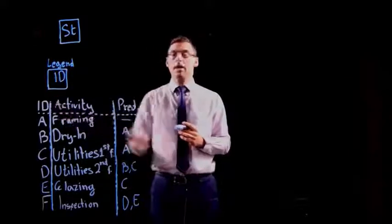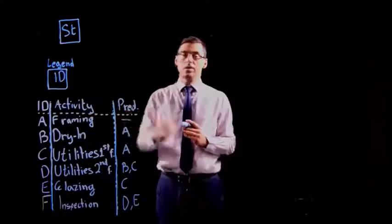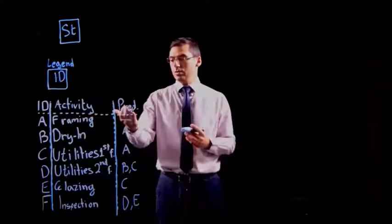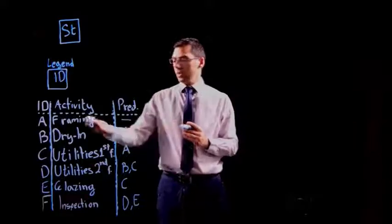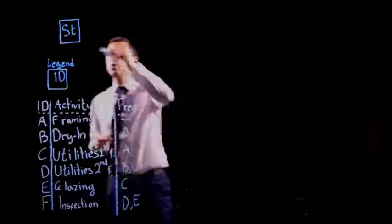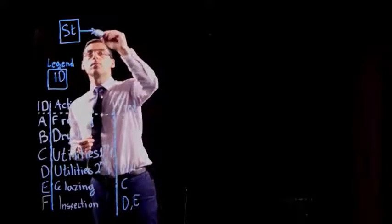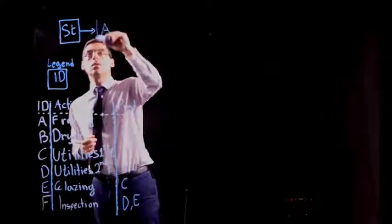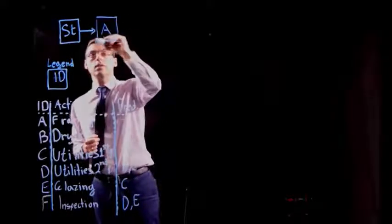In the table we see the ID of the activities, the activities themselves, the names, and here you see the predecessors. So activity A doesn't have any predecessors and it can be put into the network. There you go. That's activity A.